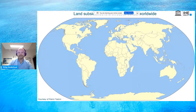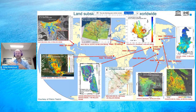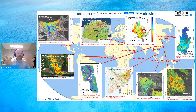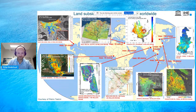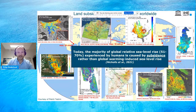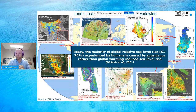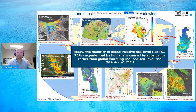The sinking of these deltas is happening all around the world. Studies from different deltas show measurements from space and the rates at which these deltas are sinking — some rates going up to several decimeters per year, which is one to two orders of magnitude larger than sea level rise. A recent study showed that today, 50 to 70 percent of the global relative sea level rise experienced by humans is caused by land subsidence rather than global warming-induced sea level rise. So at a global scale, land subsidence is currently more impactful than sea level rise.